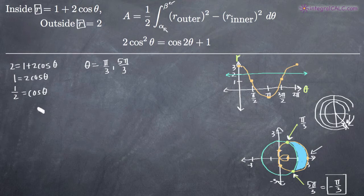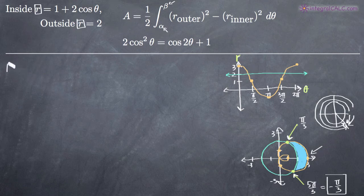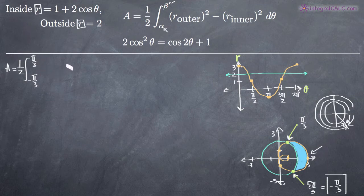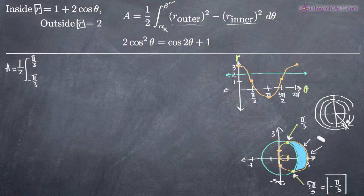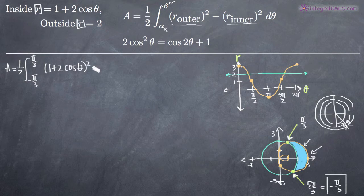Now we can plug our limits of integration into the area formula. The area formula is A equals one half times the integral from negative pi over 3 to positive pi over 3 of the outer curve squared minus the inner curve squared. From the graph, the orange curve is the outer curve and the green curve is the inner curve. So we have 1 plus 2 cosine theta squared minus 2 squared, d theta.